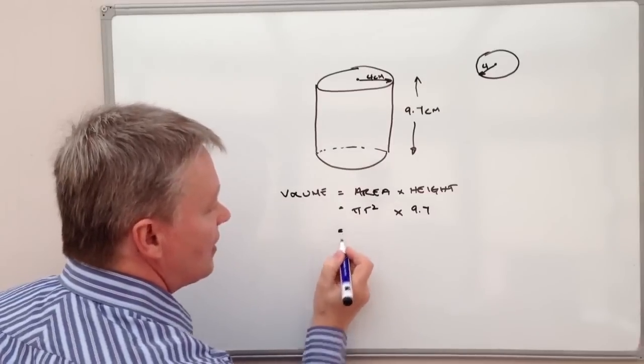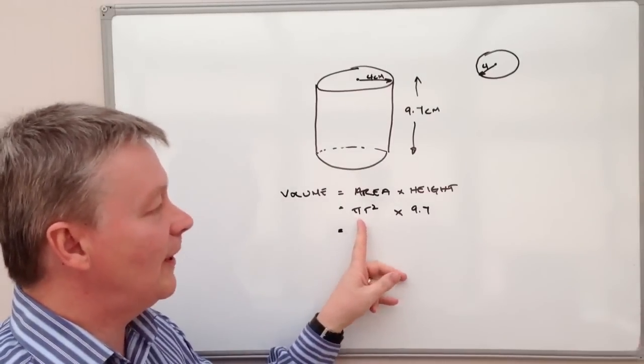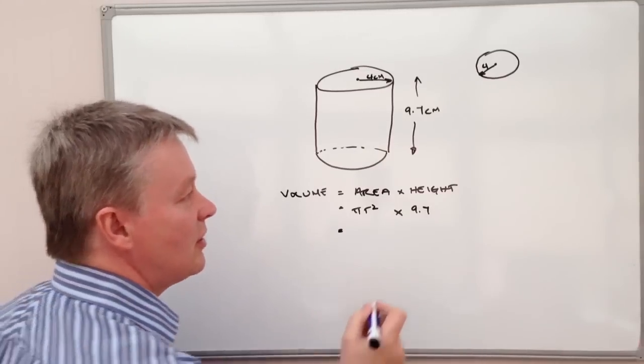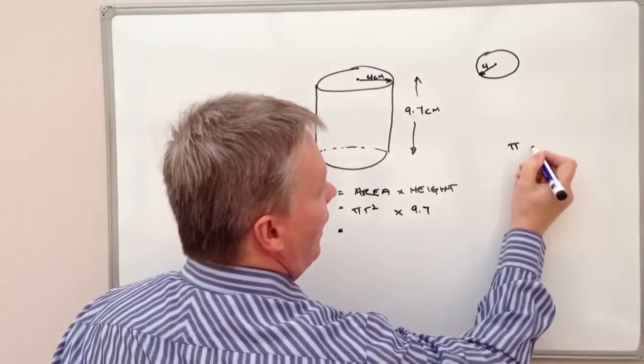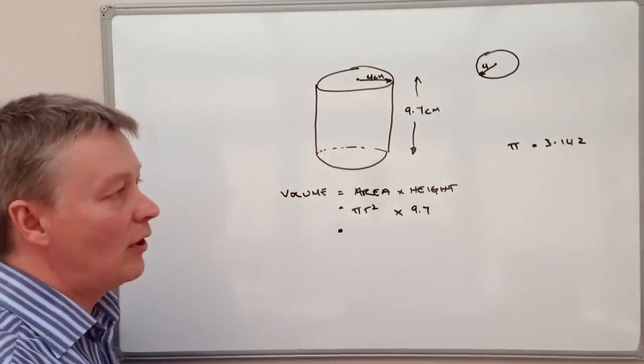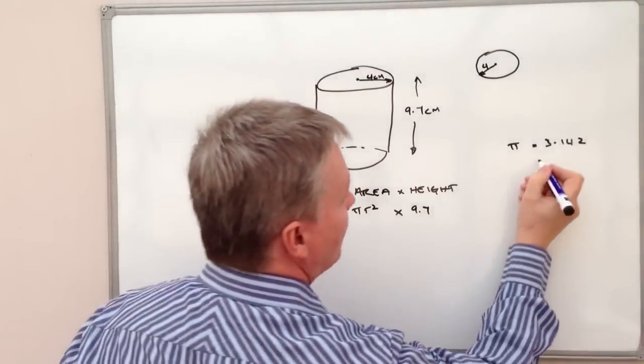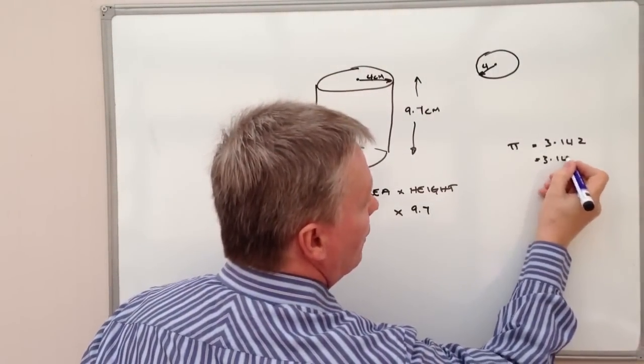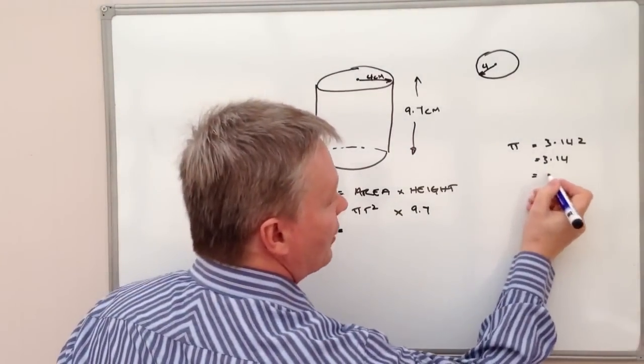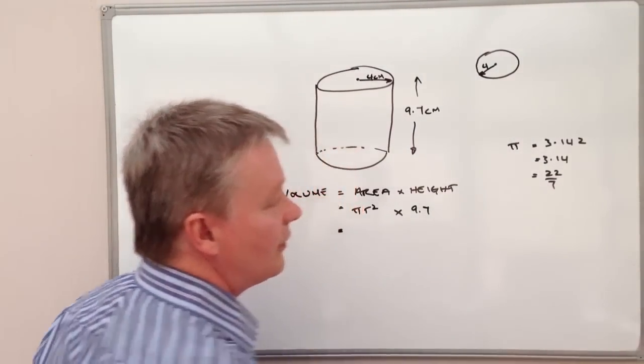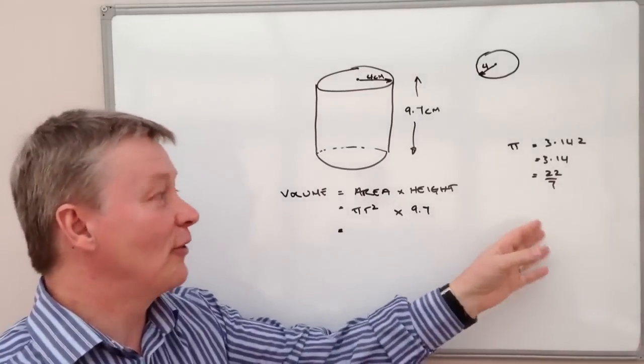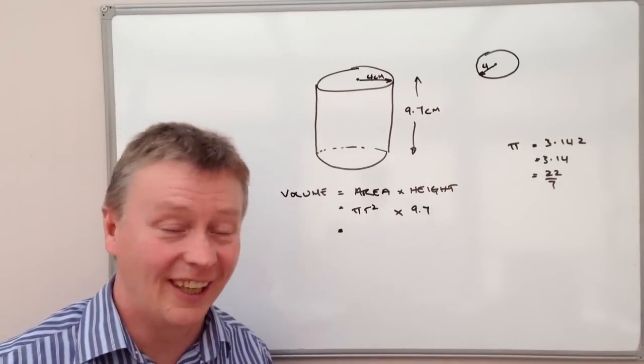The first thing is that I need to look at a value of pi. Well, for most calculations pi is usually given as 3.142 or on some papers it is given as 3.14 or it might on other occasions be given to you as a fraction which is 22 over 7, or you could even use the value of pi in a calculator.